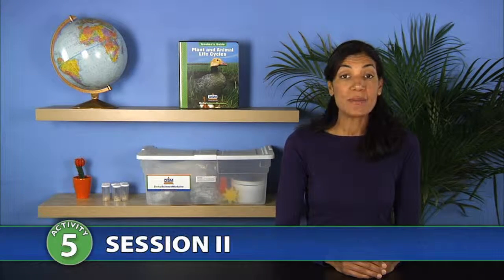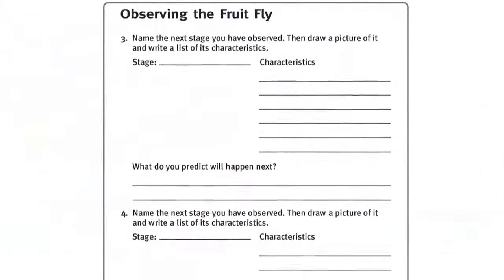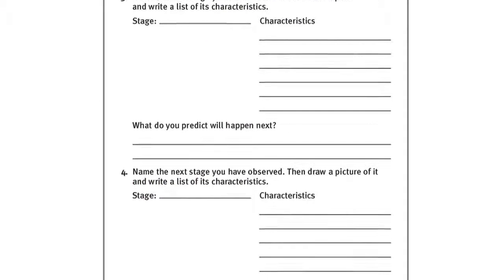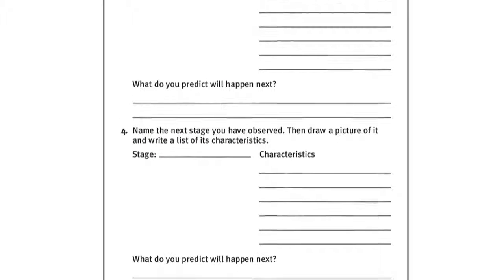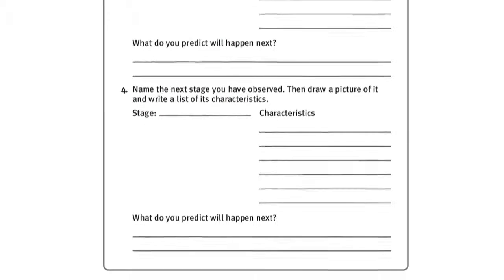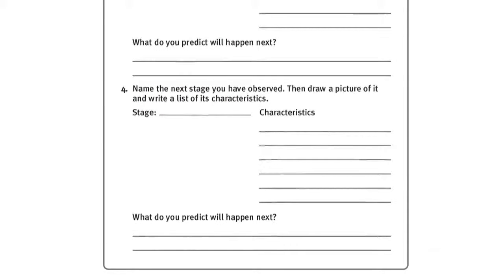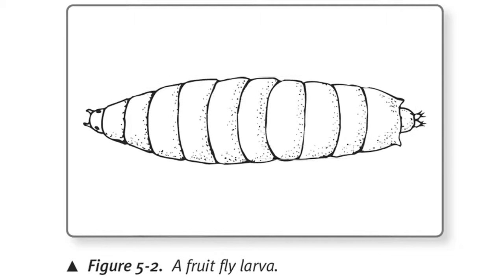To prepare for Session 2, make a copy of Activity Sheet 5, Part B, for each student, and make a copy of the fruit fly larva picture included in the fruit fly life cycle picture set for each team of two.